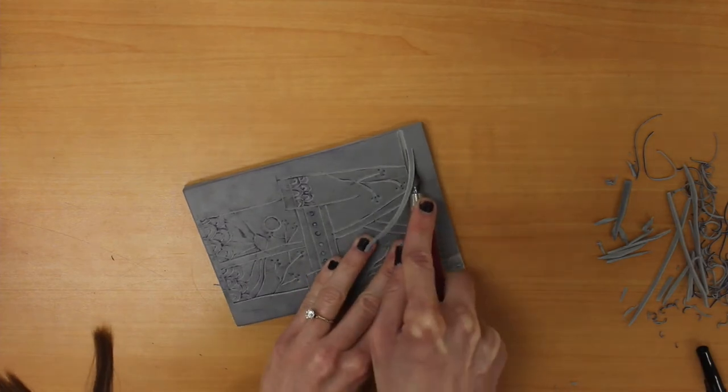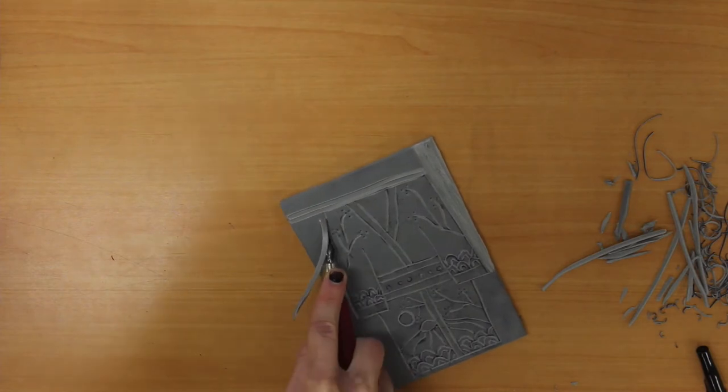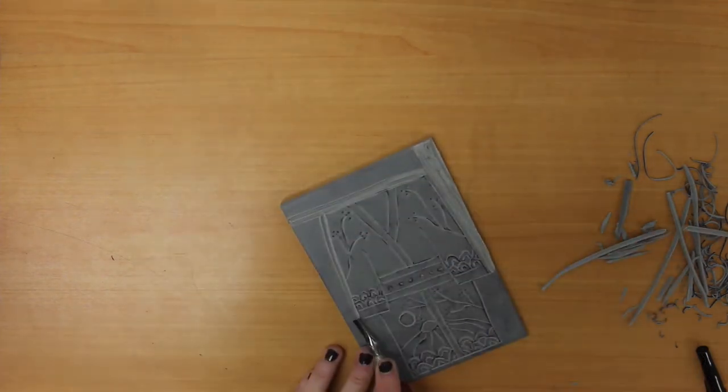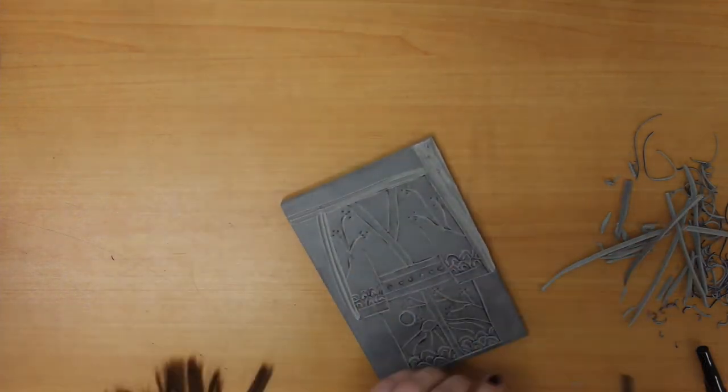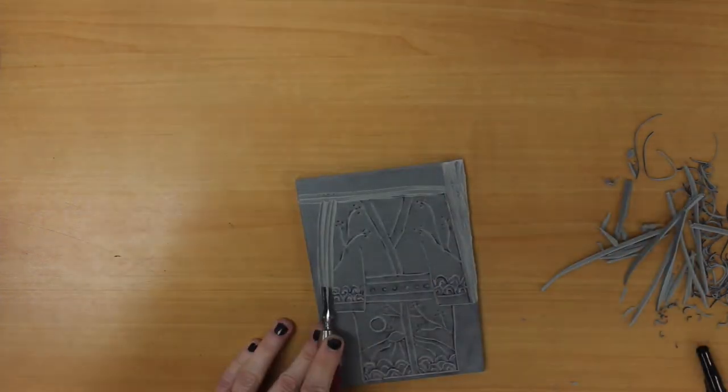Remember that we also want to carve away from ourselves. You can always rotate your block for the different areas, so for instance I can rotate my block to carve away down the sleeve as well as rotate my block when I'm carving away at the top of my kimono.